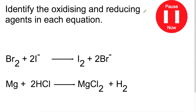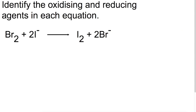Here are two examples for you to try — pause the video now. In the first example you can skip steps one and two, as we already have an ionic equation with no spectator ions. We can go straight to step three: writing the oxidation and reduction equations.